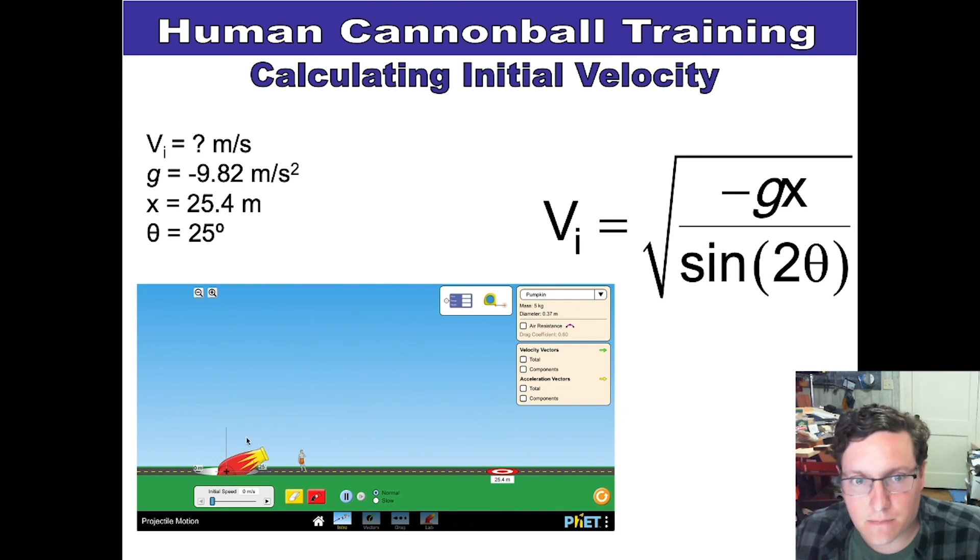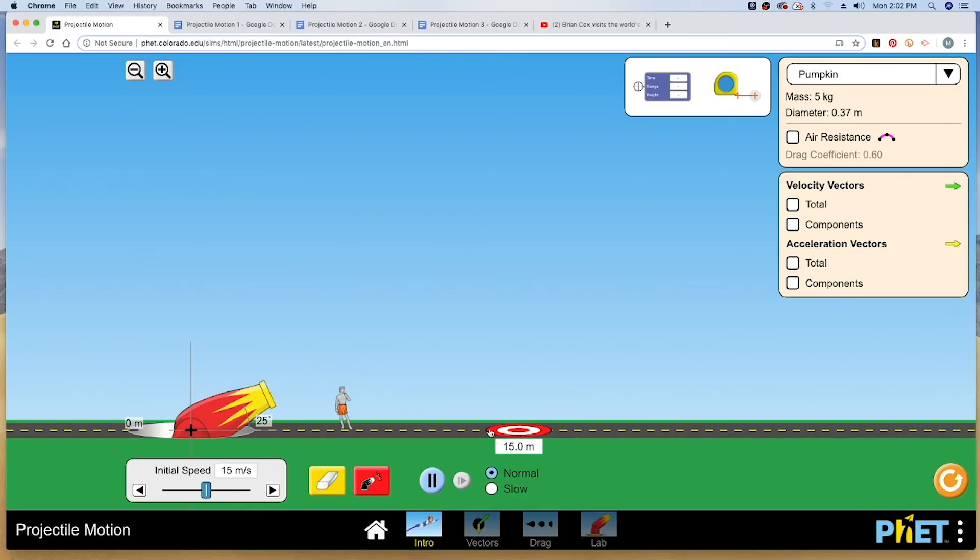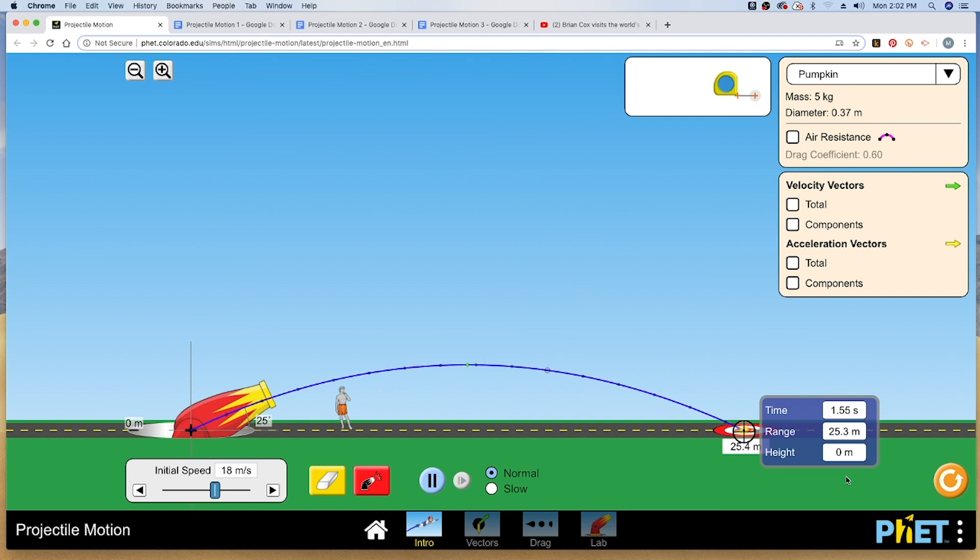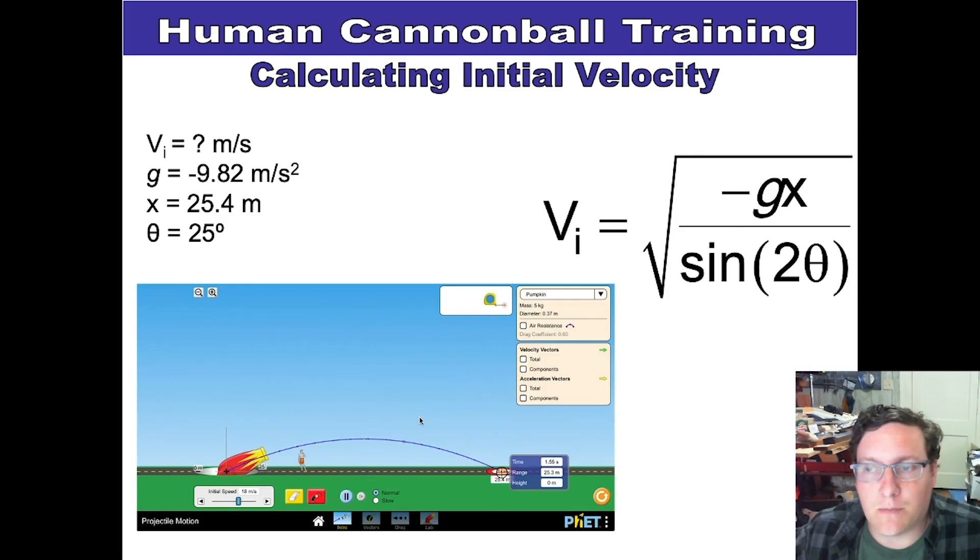We're using a projectile motion simulator online. In this, we go ahead and change our values and actually execute it. It will tell us that we pretty much have it spot on. By setting that initial speed to 18 meters per second, rounded off of course, it ends up at 25.3 meters. But for the limits of the simulation software, we know that that's more than enough to equal out.